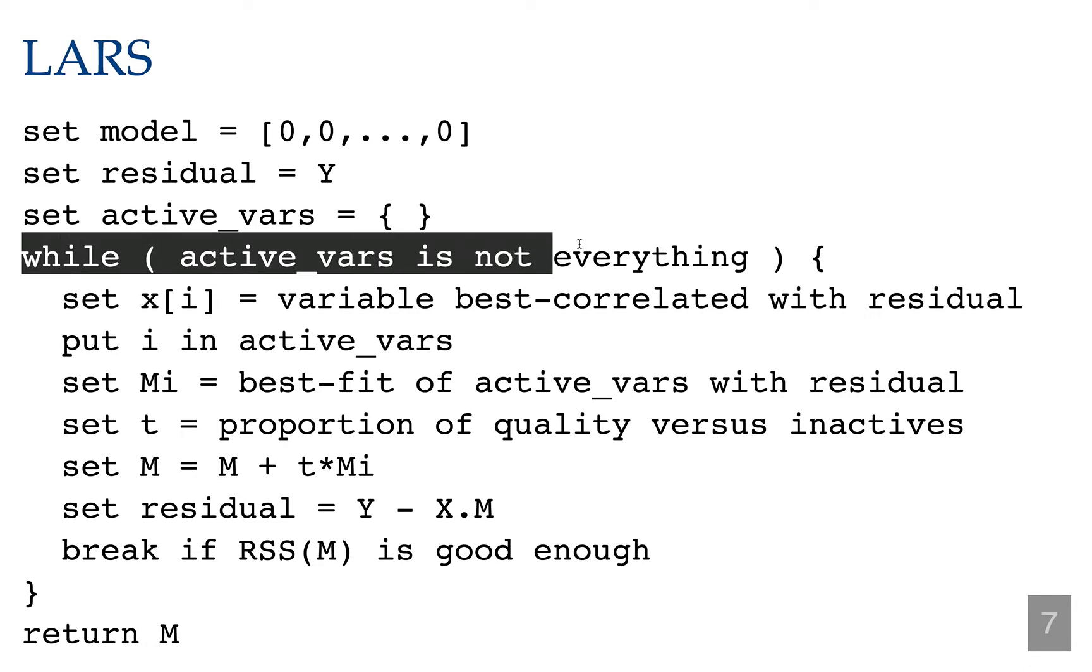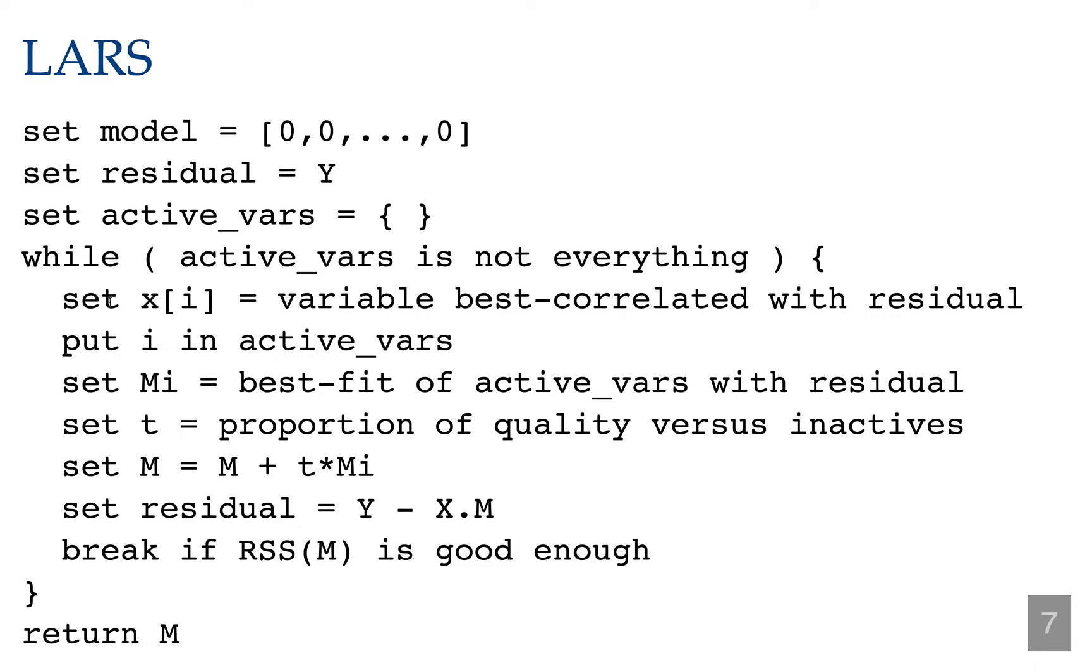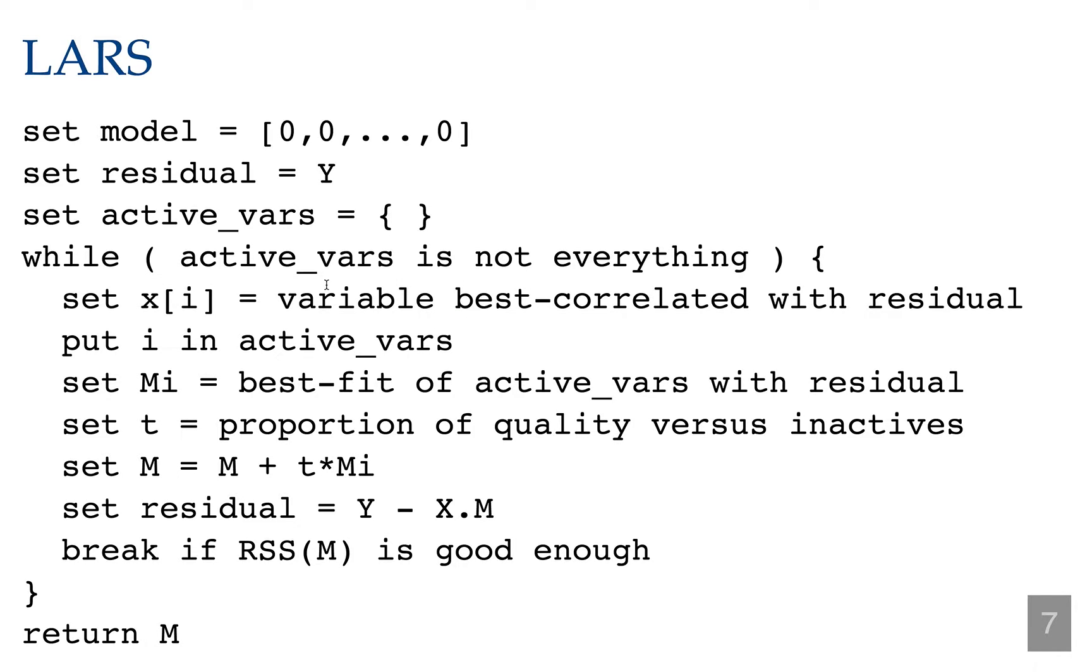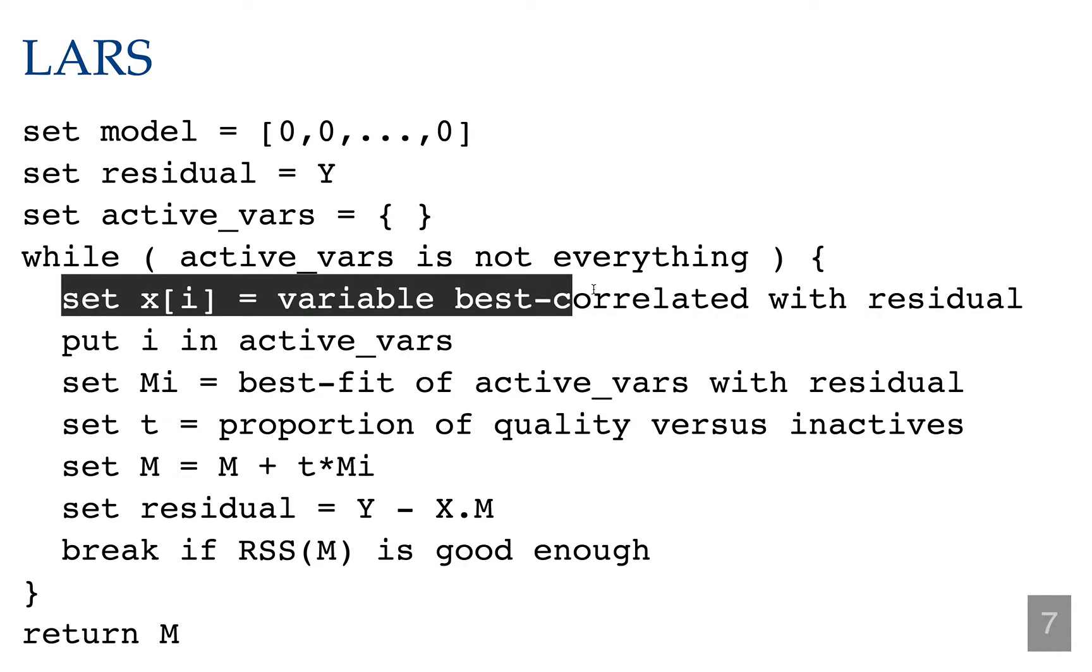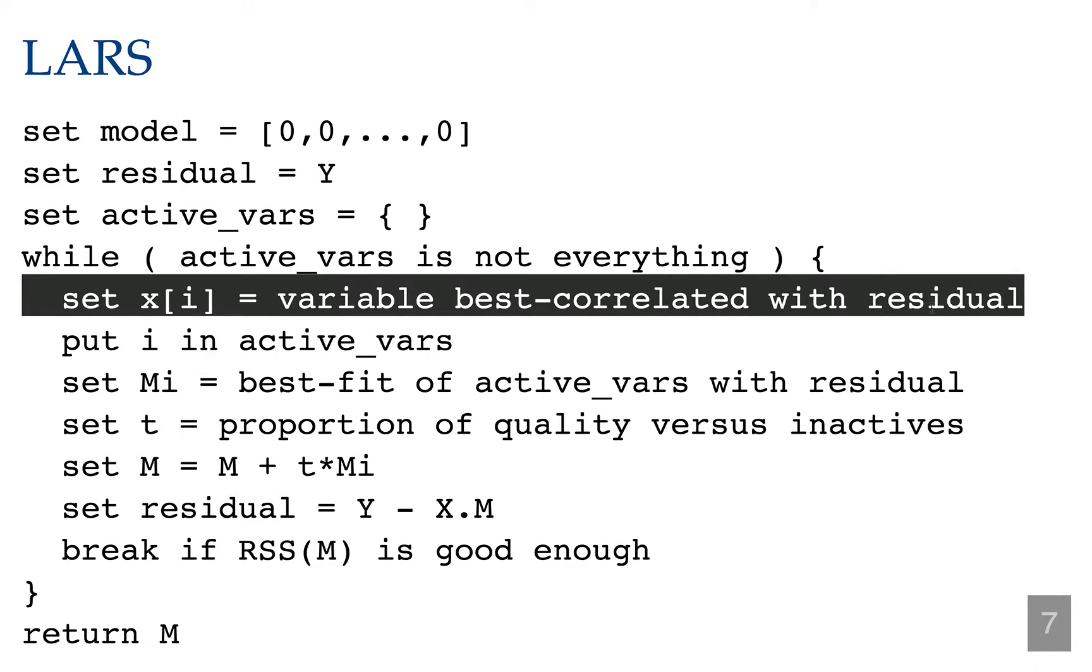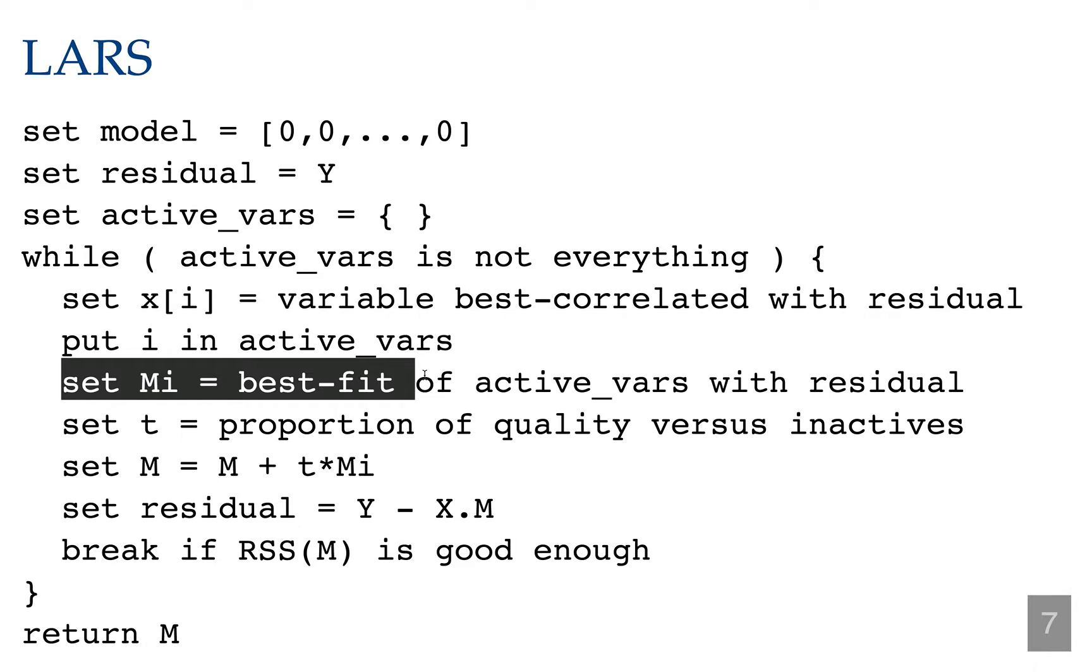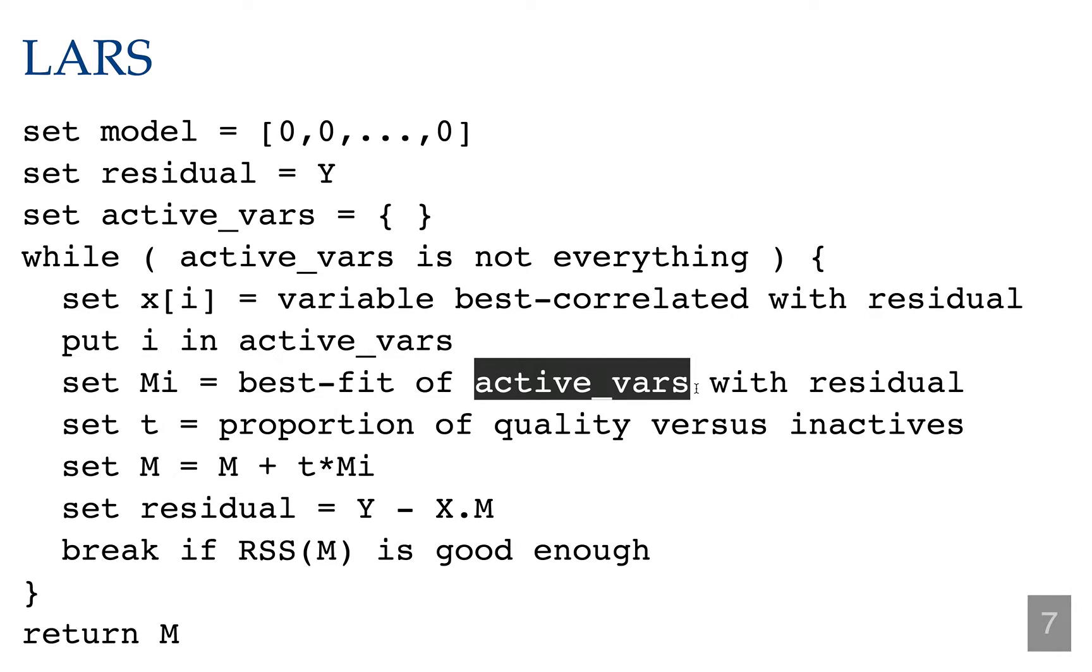So we're going to loop until we're using all of our variables. We're going to look at our current residual and find the variable that's best correlated with residual. And by the way, this is the variable that's not in our active list. So among the inactive variables, let's find the one that's best correlated with residual. We will then include that variable in our active variables list and we are going to build a new model that's the best fit of the active variables, including the new one, with the current residual.